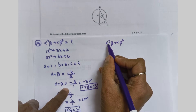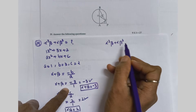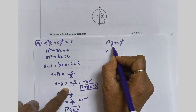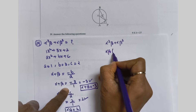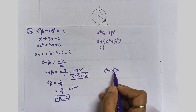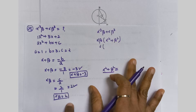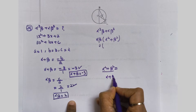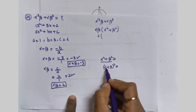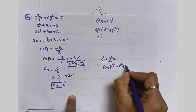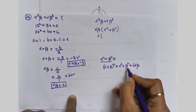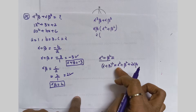In α³β + αβ³, what is the common factor? Alpha is common and beta is common, so alpha·beta is common. Taking alpha·beta out, what remains inside is alpha² + beta². Now we need to find alpha² + beta². We use the formula: (alpha + beta)² = alpha² + beta² + 2·alpha·beta.